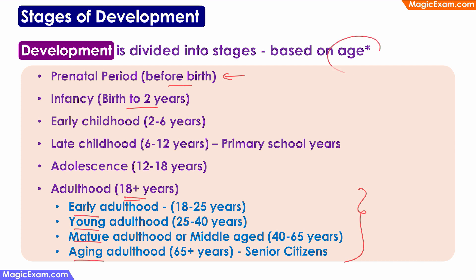There is an asterisk on the term age because if you look at different books, you will see some minor differences in this classification. For example, some books may say early childhood is from 2 to 5 years, and some may say late childhood is 6 to 11 years. Such minor variations do not matter because they are based on different cultures, scientists, and countries.